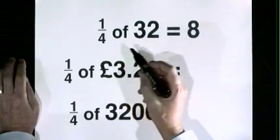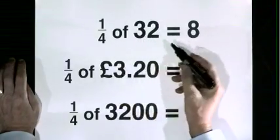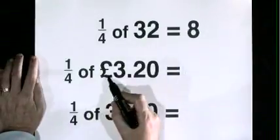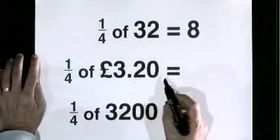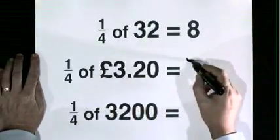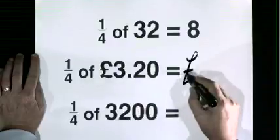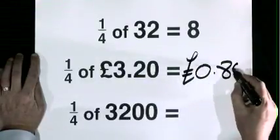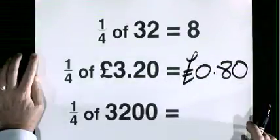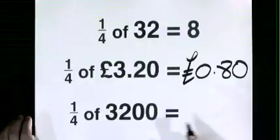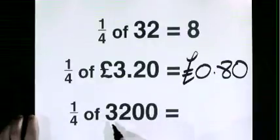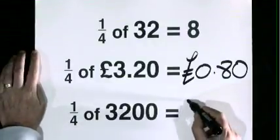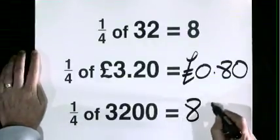A quarter of 32 is 8. A quarter of 3 pounds 20 is no pounds 80, or 80p. A quarter of 3200 is 800.